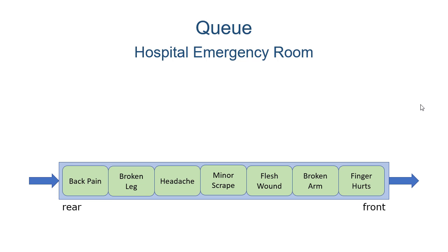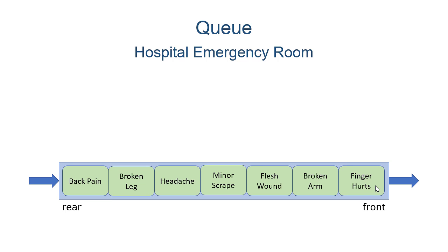So suppose we had a hospital emergency room that used a queue. Here we can see at the front of the line we have someone whose finger hurts, followed by someone with a broken arm, then a flesh wound, a minor scrape, a headache, a broken leg, and back pain. Using a queue, the person with the hurt finger would be the first person that got treated.